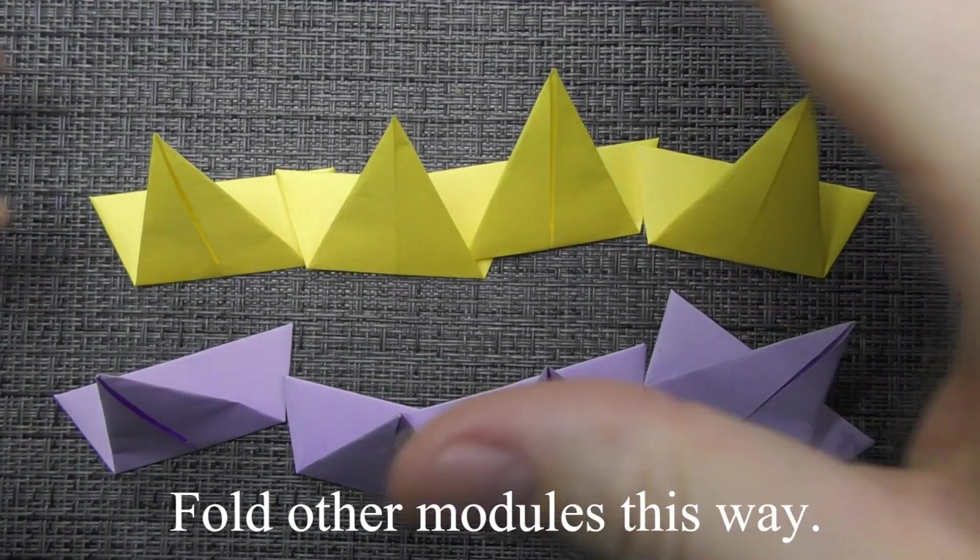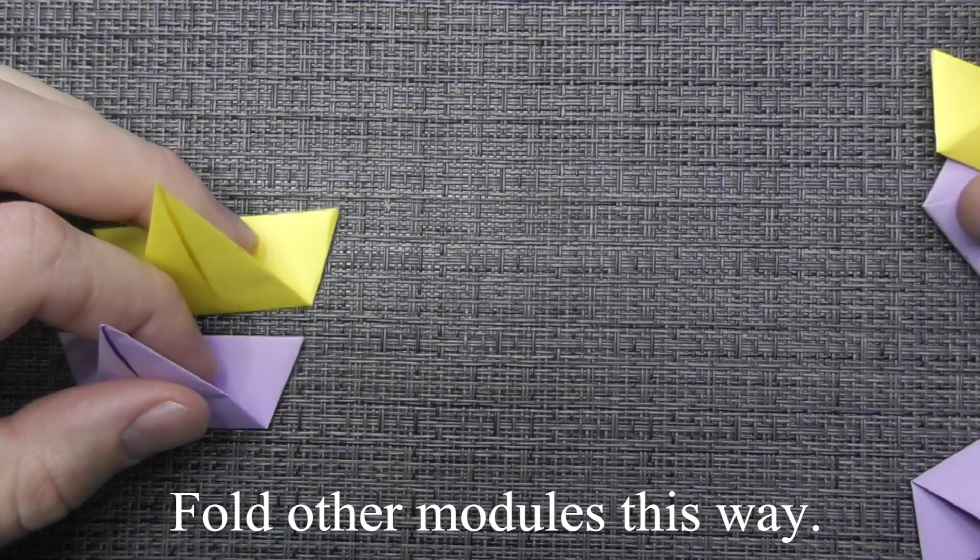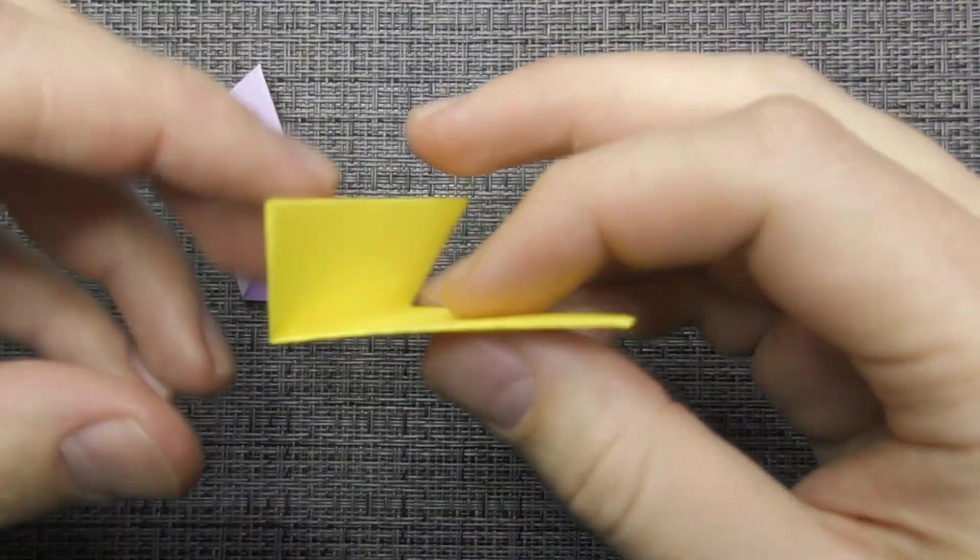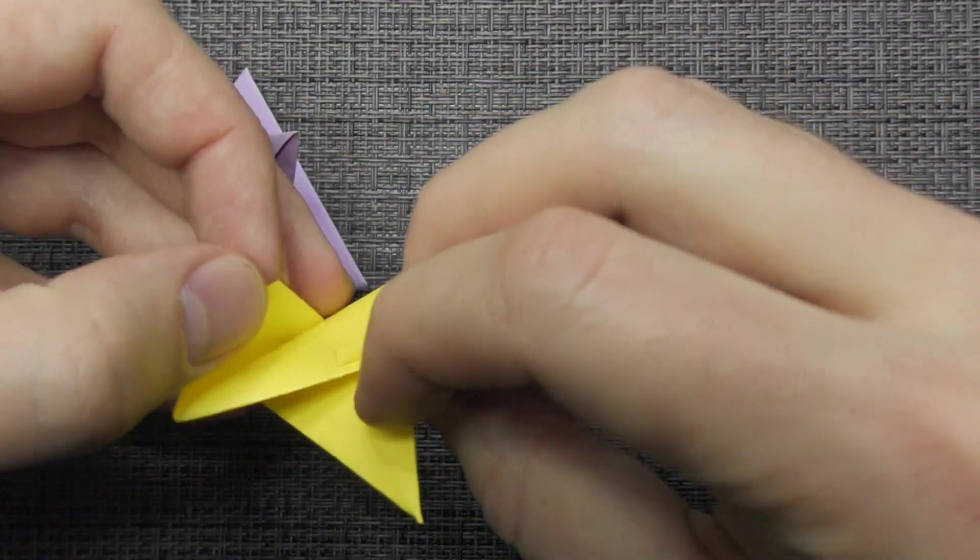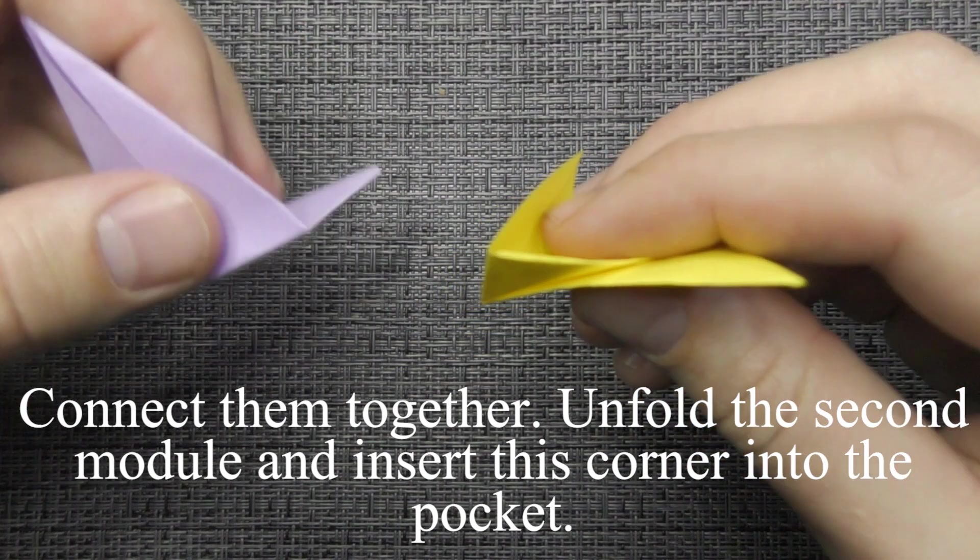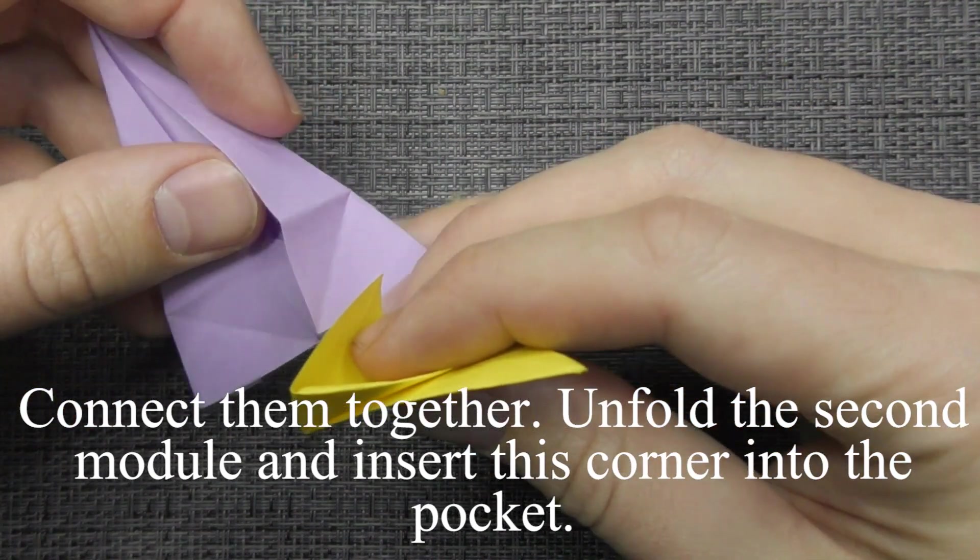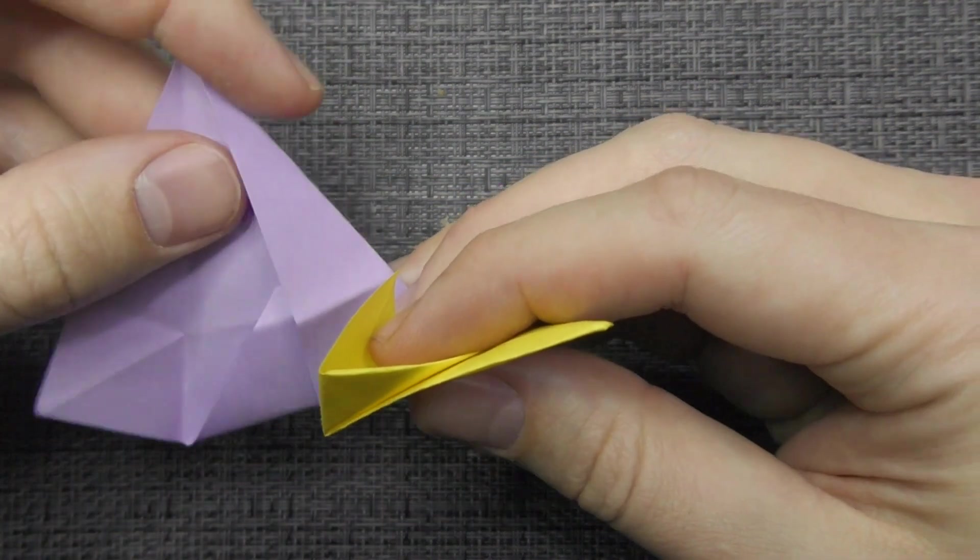Fold other modules this way. Connect them together. Unfold the second module and insert this corner into the pocket.